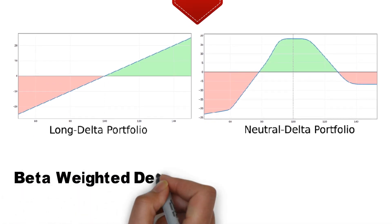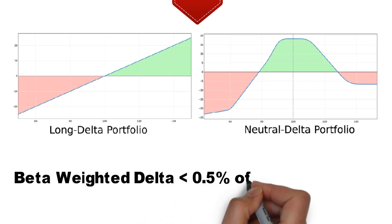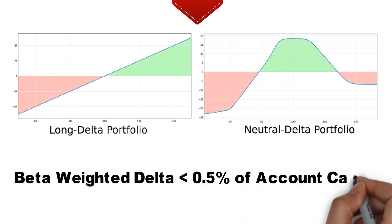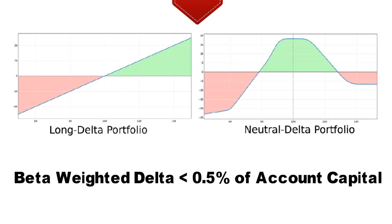Just make sure to keep your directional exposure in check. As a rough guideline, try to keep your beta weighted delta of all your positions below 0.5% of your total account capital. So if you have a $10,000 account, try to keep your beta weighted delta between minus 50 and 50. To achieve this, you will have to balance out positive and negative delta positions.